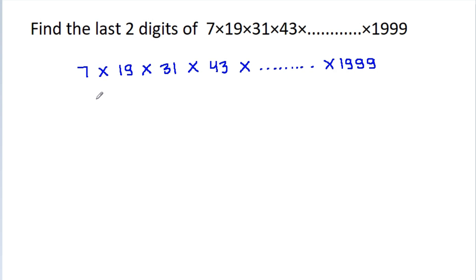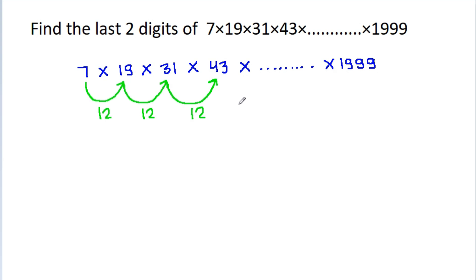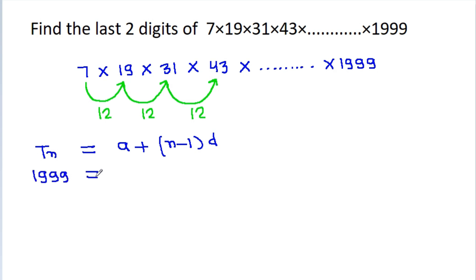The difference between 7 and 19 is 12. The difference between 19 and 31 is 12. Between 31 and 43 is also 12. So the numbers are in AP. In an AP, we can find the total number of terms. The formula is T_n = A + (N-1) × D. Here T_n = 1999, A = 7, and D = 12.